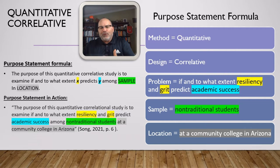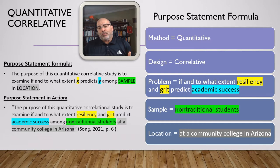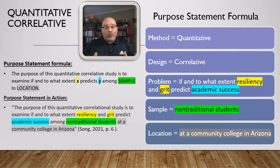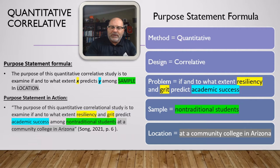Moving from the problem statement, I create a similar formula for the purpose statement: method plus design plus problem plus sample plus location equals your purpose statement. You can articulate it as: the purpose of this quantitative study is to examine if and to what extent X predicts Y among the sample within a certain location. In our real-world example: the purpose of this quantitative correlational study is to examine if and to what extent resiliency and grit predict academic success among non-traditional students at a community college in Arizona.